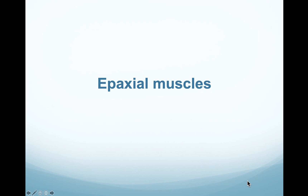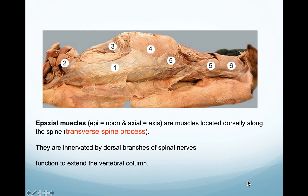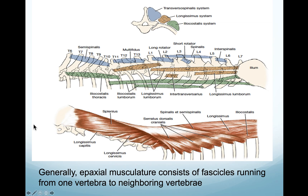In this lecture we are going to talk about the epaxial muscle. Epaxial means 'epi' - upon - 'axial' which is the axis. The axial skeleton extends from the skull to the vertebral column to the tail, then we have the bony thorax and the sternum. Any muscle located dorsally along the transverse spinous processes of the vertebral column is called an epaxial muscle, and these muscles are the extensor muscles of the vertebral column. They are innervated by the dorsal branch of the spinal nerve.